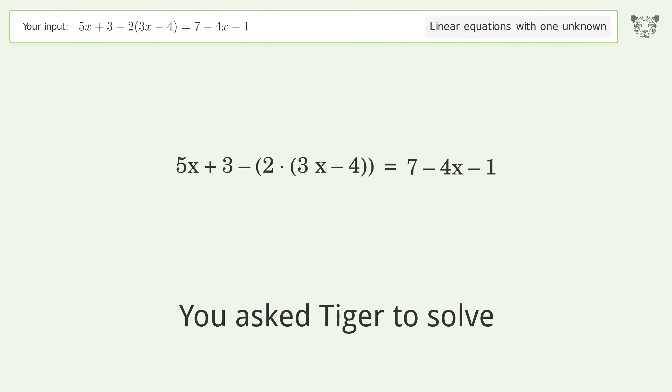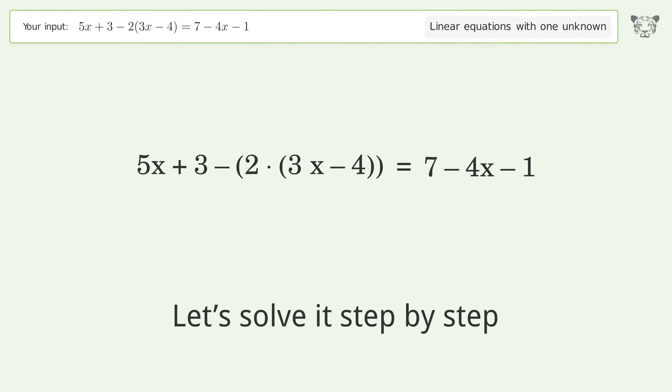You asked Tiger to solve this. It deals with linear equations with one unknown. The final result is x equals negative 5 over 3. Let's solve it step by step.